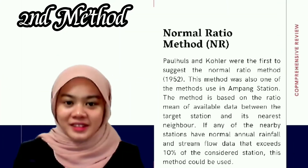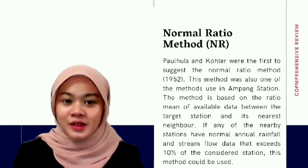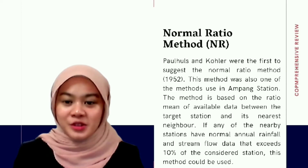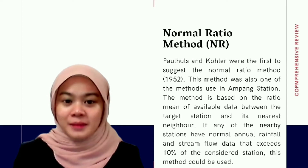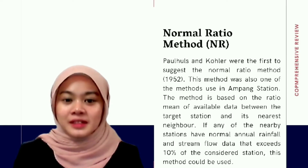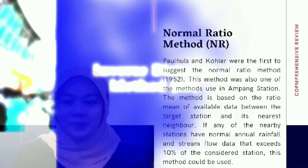Normal ratio method: OHS and Cochner were the first to suggest the normal ratio method in 1952. This method was also one of the methods used in our own station. The method is based on the ratio mean of available data between the target station and its nearest neighbor.